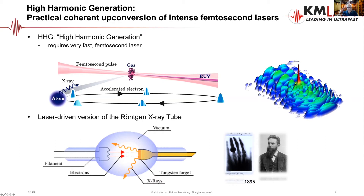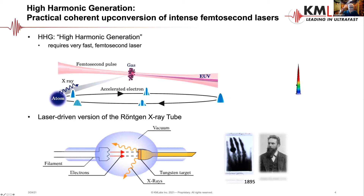In an X-ray tube, you boil electrons from a filament, accelerate them, and slam them into a target. In high-harmonic generation, you do the same thing but make the process fully coherent: you use a coherent electromagnetic field to extract an electron from an atom, accelerate that electron coherently, and then it collides with a target with which it is also coherent. That process gives us coherent X-ray emission — all of the atoms act exactly the same, which is why you get a coherent forward-directed beam.